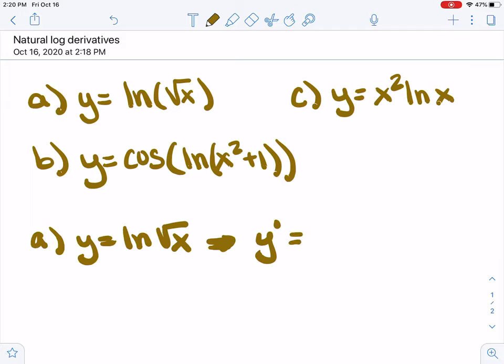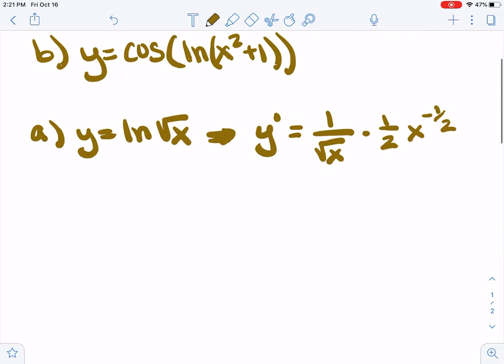The derivative of the natural log is 1 over x, so it's 1 over x but evaluated at the inside function, times the derivative of the inside function. So that's the chain rule applied with a natural log derivative.